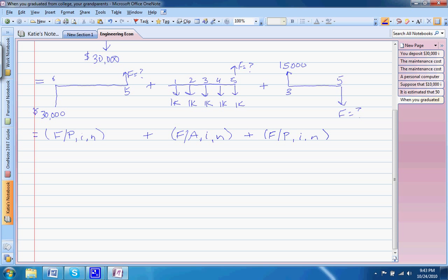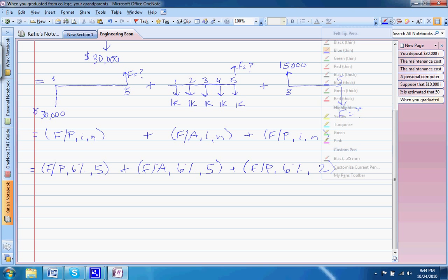So we can fill in these equations from our factor tables. I'll break this out first. So we're going to have F given P at an interest rate of 6% and n equals 5, plus F given A, 6% n equals 5, plus F given P, 6%. And here n equals 2. So this part here is what you want to pay attention to in this problem, the number of years for each of these.